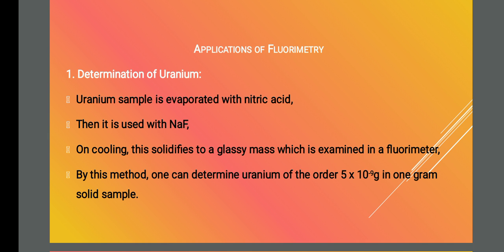The first application is determination of uranium. The uranium sample is evaporated with nitric acid, then it is fused with sodium fluoride. On cooling, this solidifies to a glassy mass which is examined in a fluorometer. By this method we can estimate uranium of the order of 5×10⁻⁹ gram in 1 gram of solid sample — that is, in the nanoscale range.